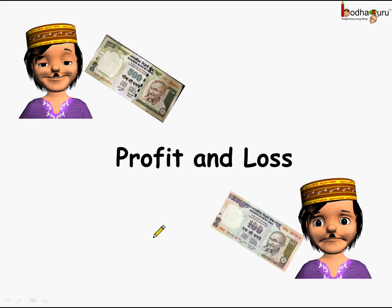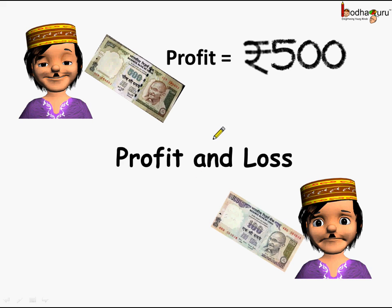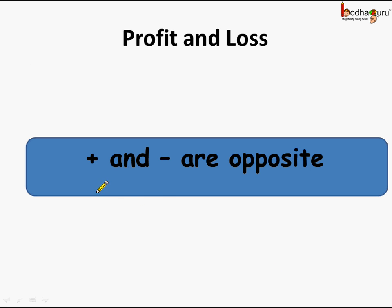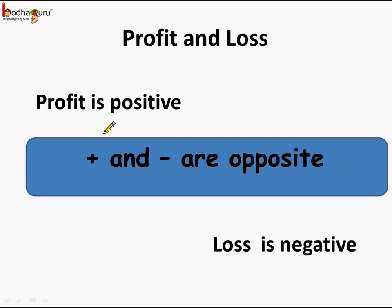Now, what about profit and loss? This is Karim. Assume Karim made a profit of rupees 500 one day, and the next day he made a loss of 100 rupees. We know plus and minus are opposite in nature — same way are profit and loss. So let's assume profit is positive and loss is negative, because profit means we gain something and get additional money, and in loss we lose something and there is less money with us.